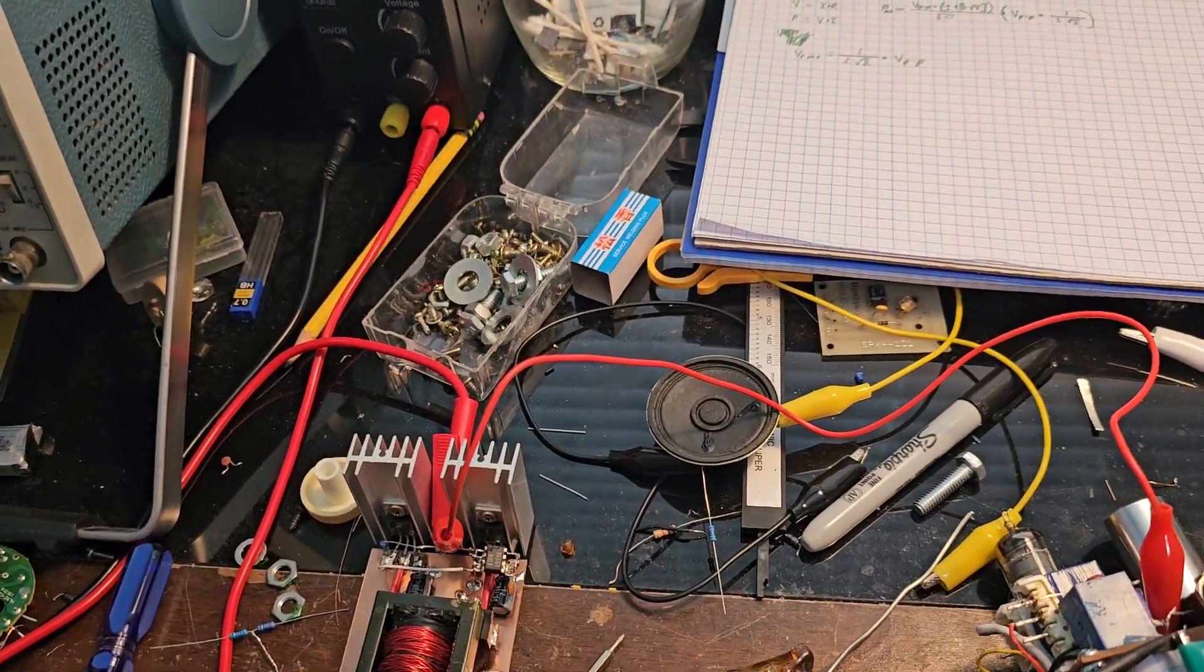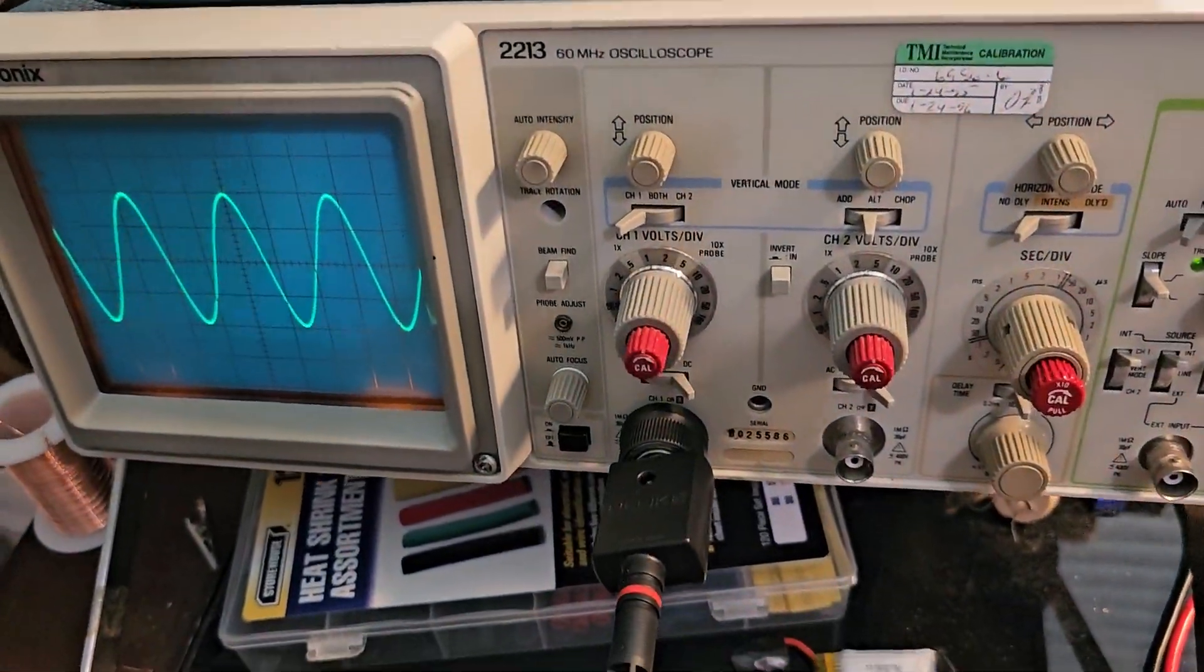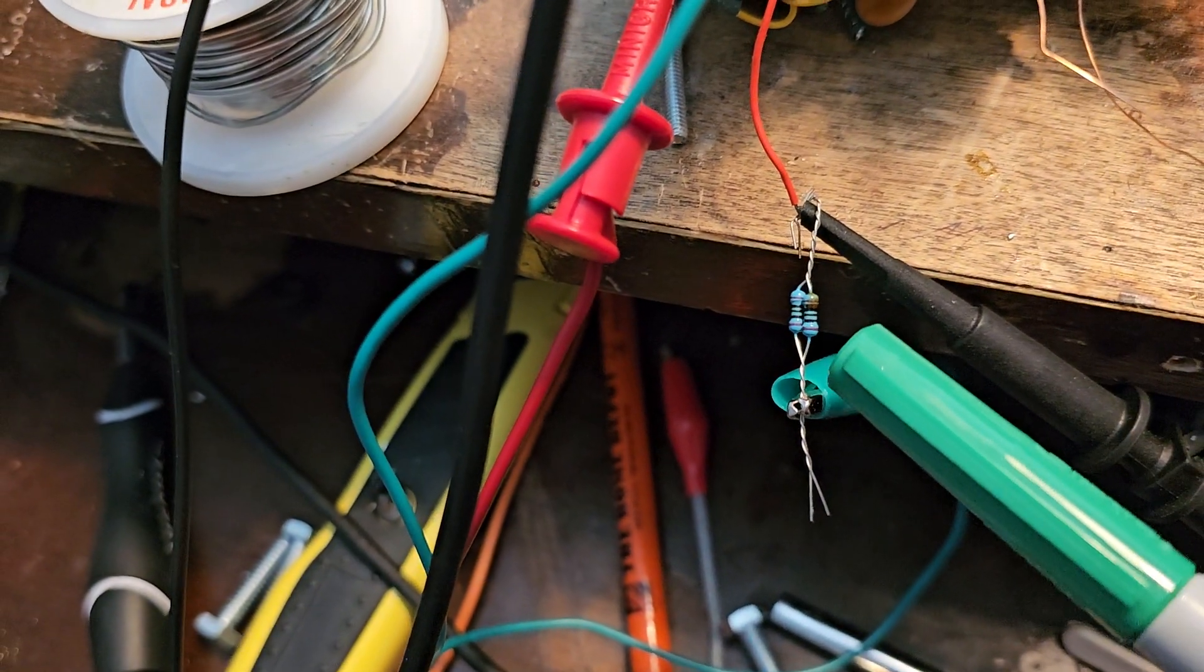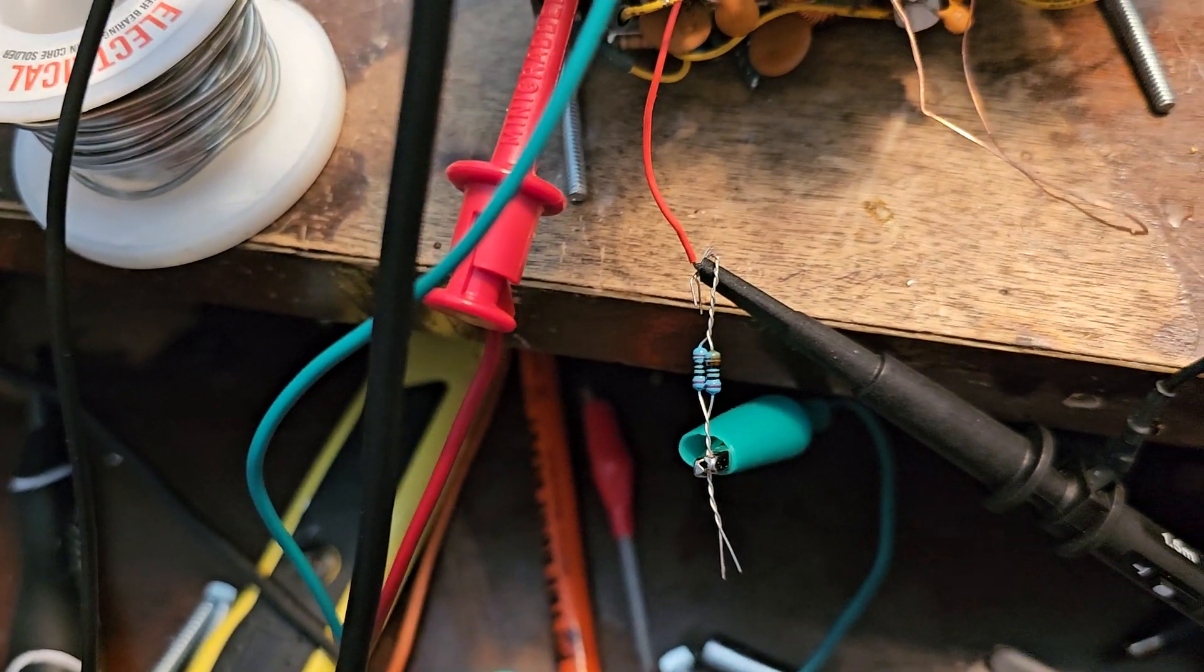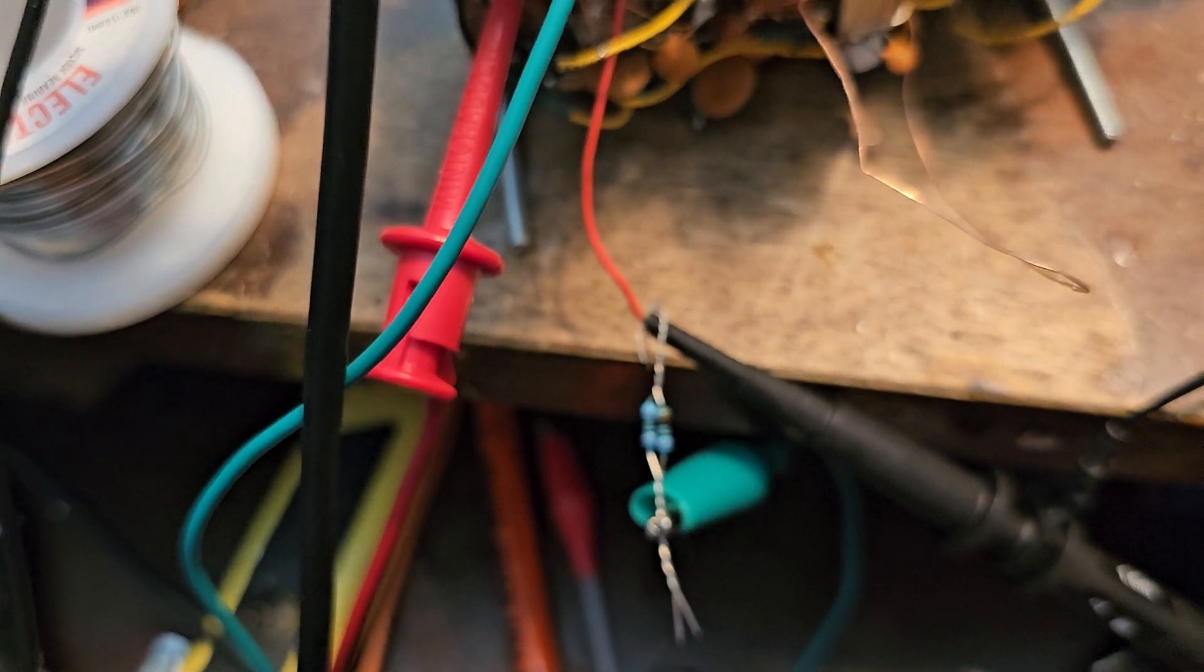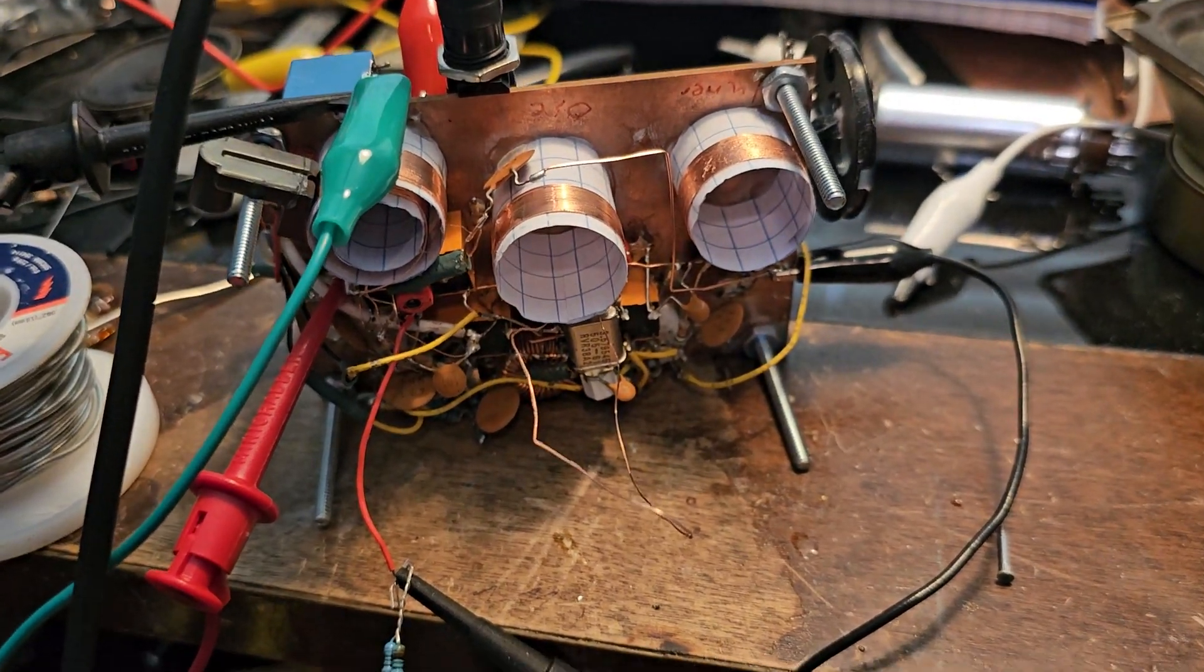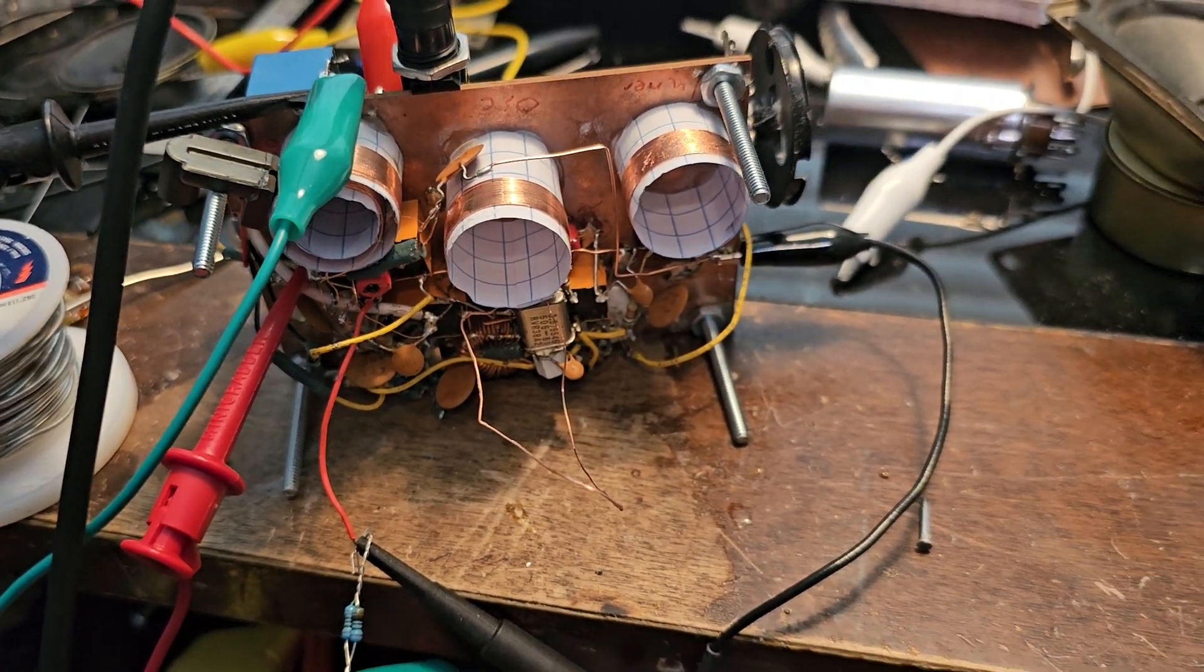So what you need is an oscilloscope, a 50 ohm load - here I have just two 100 ohm resistors tied in parallel to achieve 50 ohms - and whatever you want to measure the RF power from, like this RF generator I have here.